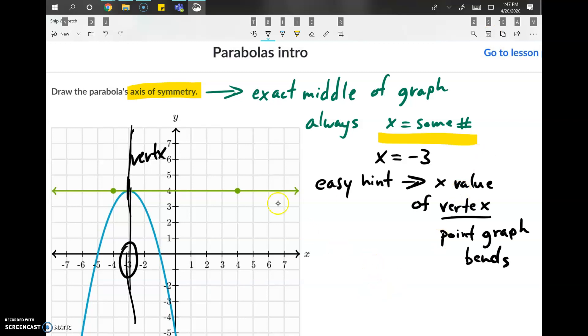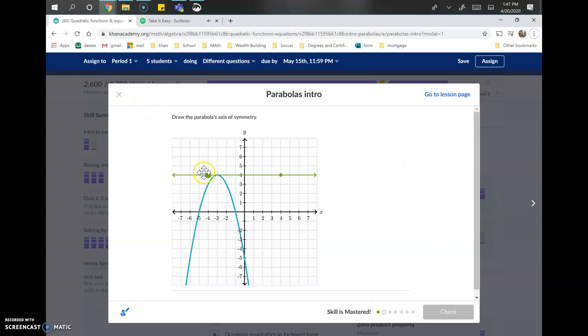We're going to drag these two dots in line with x equals negative 3, so put one on the vertex and the other one anywhere I want as long as it's a straight line, just like that. The line of symmetry will always be a vertical line.